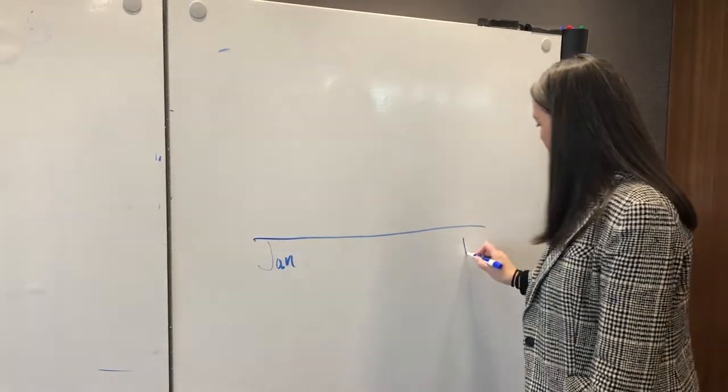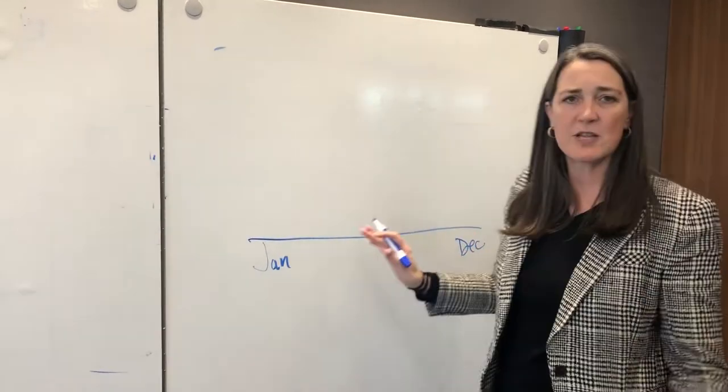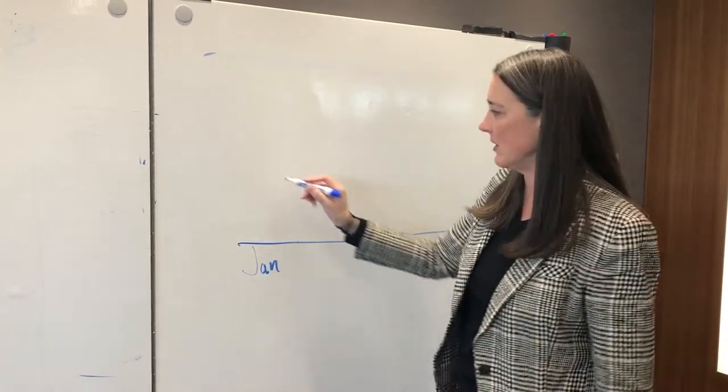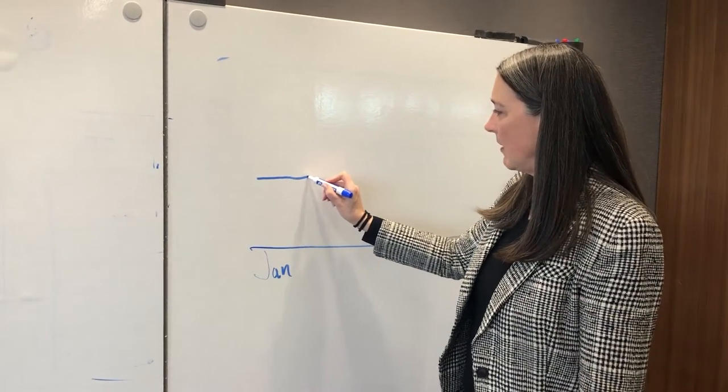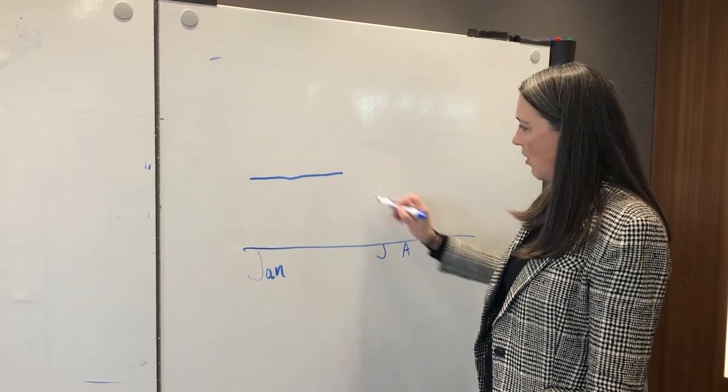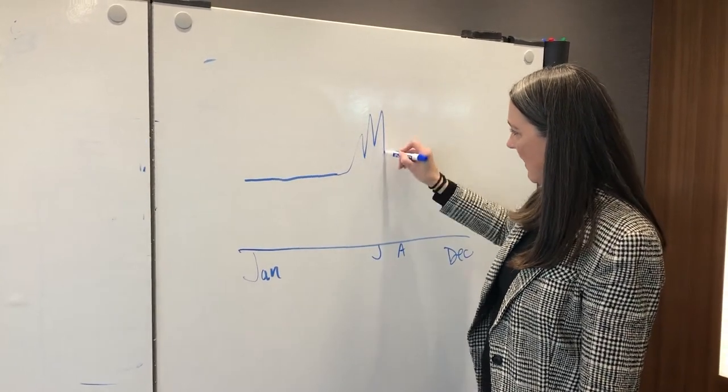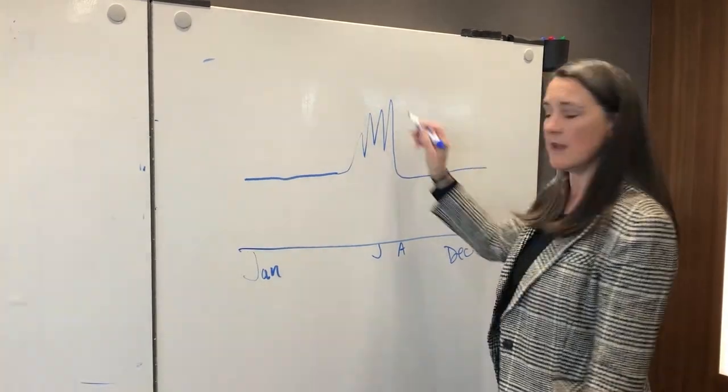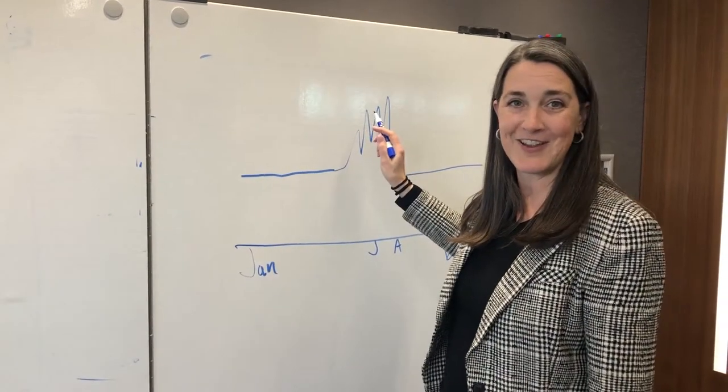This is January to December. Here's a typical load curve for Michigan. We have average load and then all of a sudden you hit July and August and you have some super peaky hours in the year.